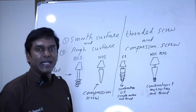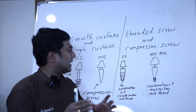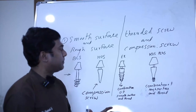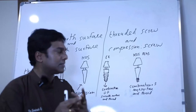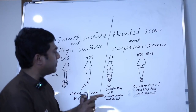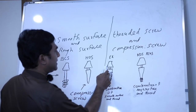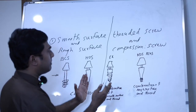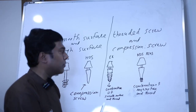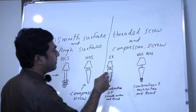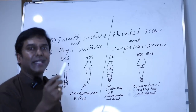Now coming on to the EX design. This is actually a combination of smooth surface, threads, and compression — three functions in one design. The tapered body provides compression, while the threads give threaded engagement with the bone, so it functions like a compression screw. At the same time, in areas where you have cortical bone, the threads will engage the cortical bone as well.